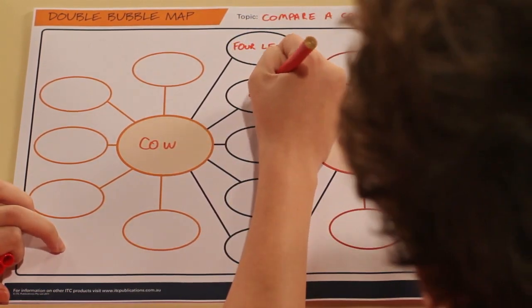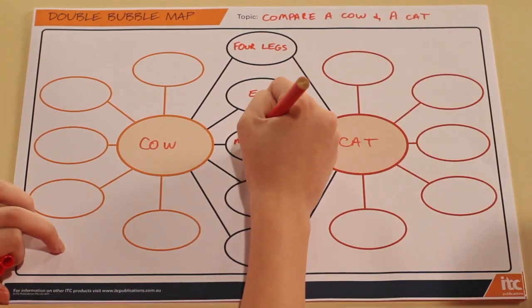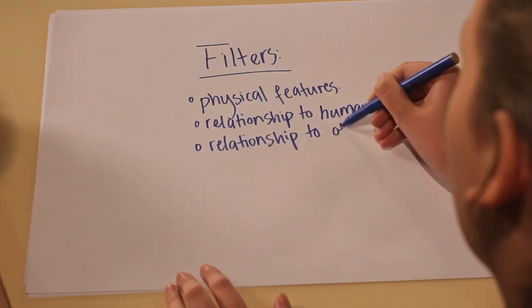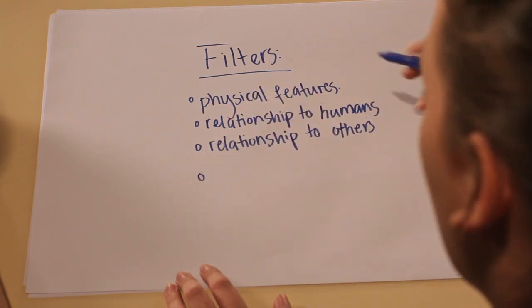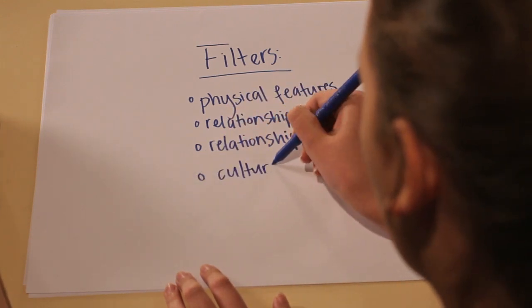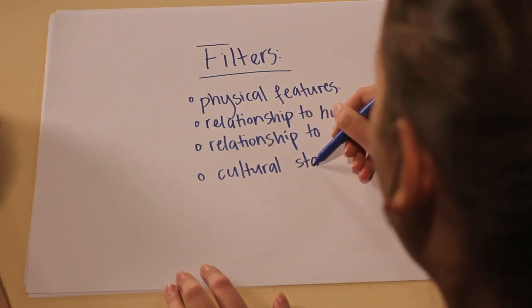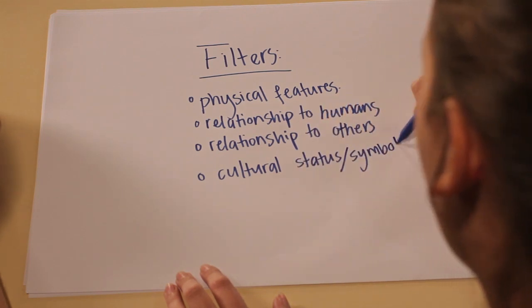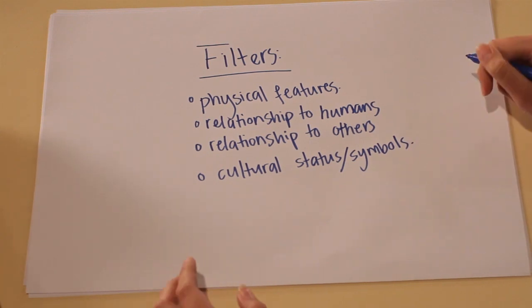Red team has come up with lots of physical attributes, but nothing else. Blue team — wow. They're applying filters. They're not only looking at the physical features of a cow and cat, but now they're looking at the relationship with humans and the relationship with other cows and other cats.